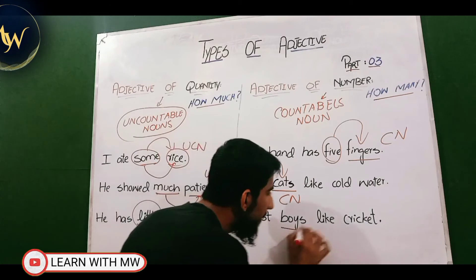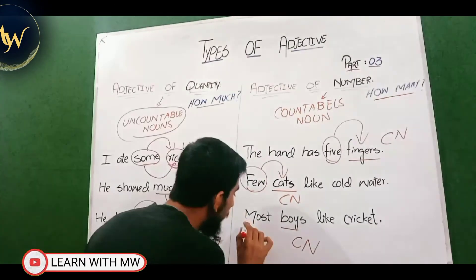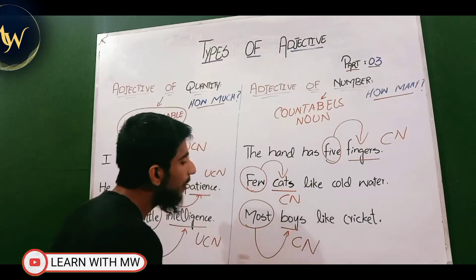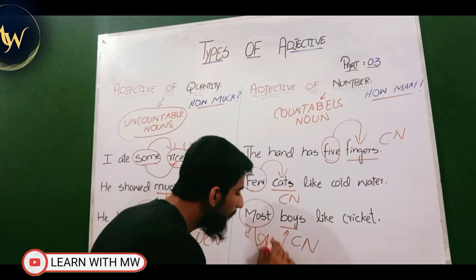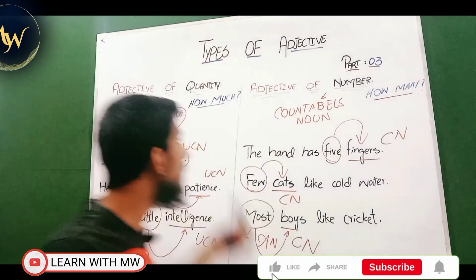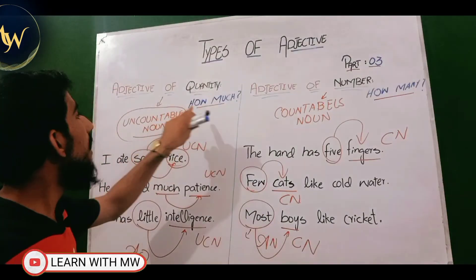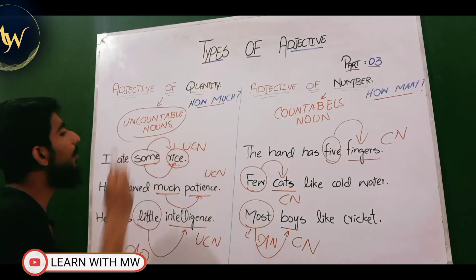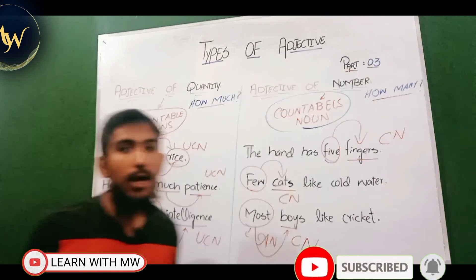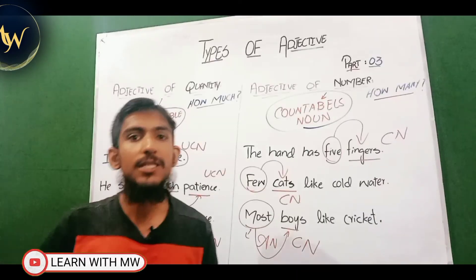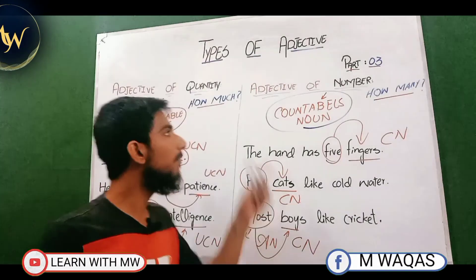'Most boys like cricket' — boys is a countable noun because we can count boys and form the plural. Most adds meaning to the countable noun, so most is adjective of number in English grammar. Through these examples, we have learned the difference: adjective of quantity answers 'how much' and comes with uncountable nouns, while adjective of number answers 'how many' and comes with countable nouns.